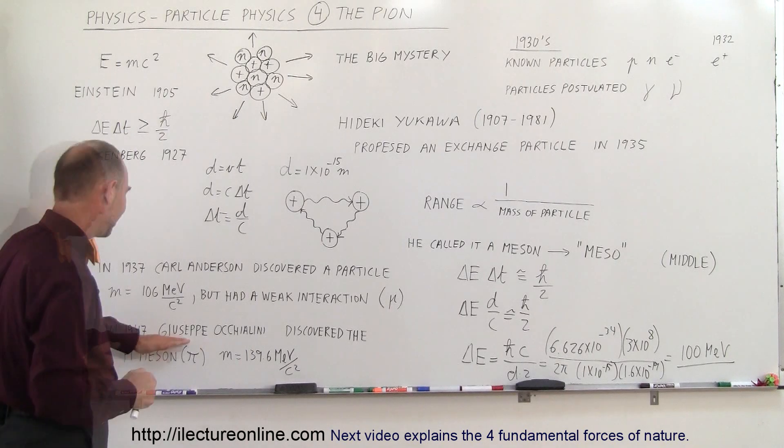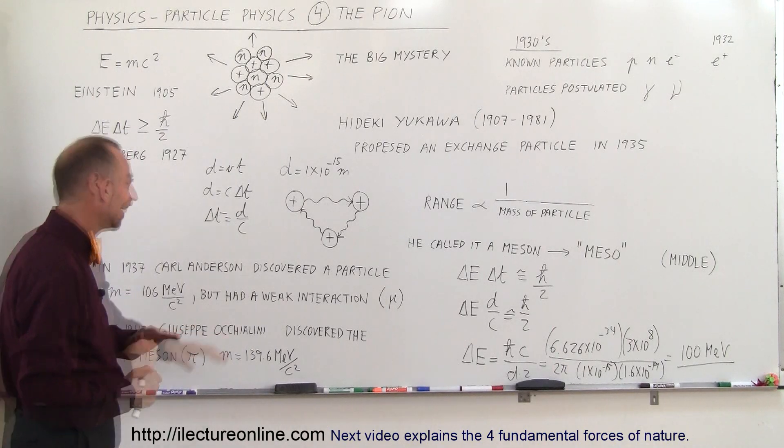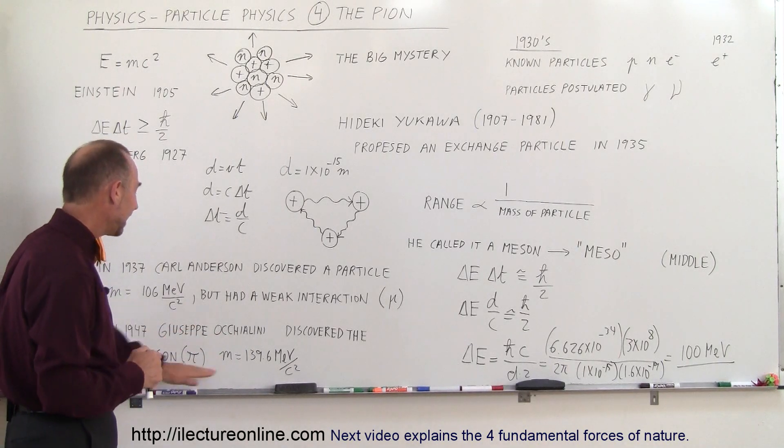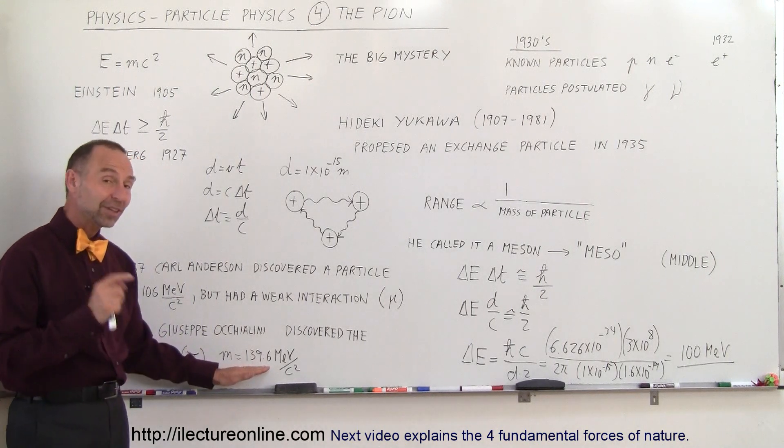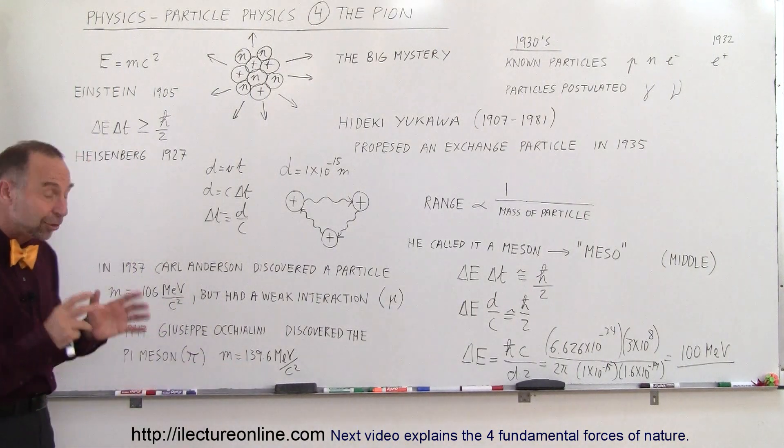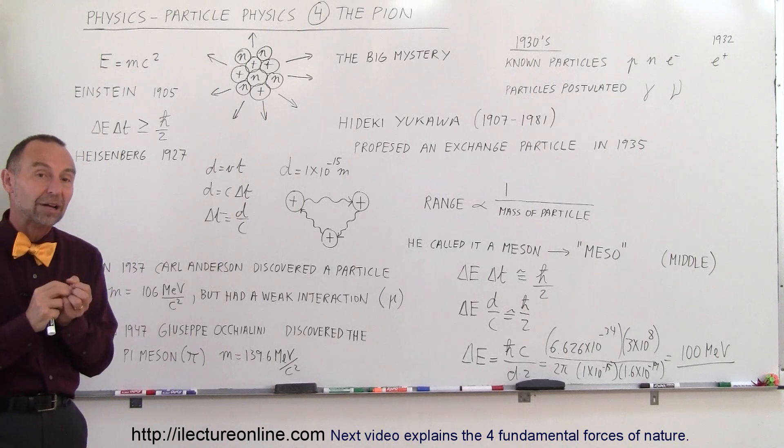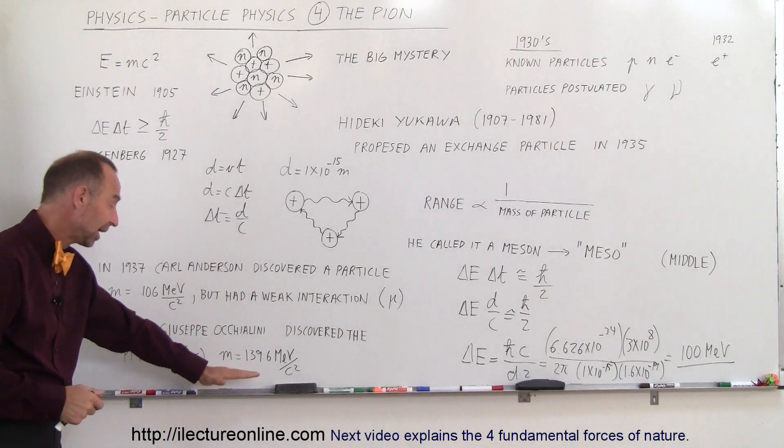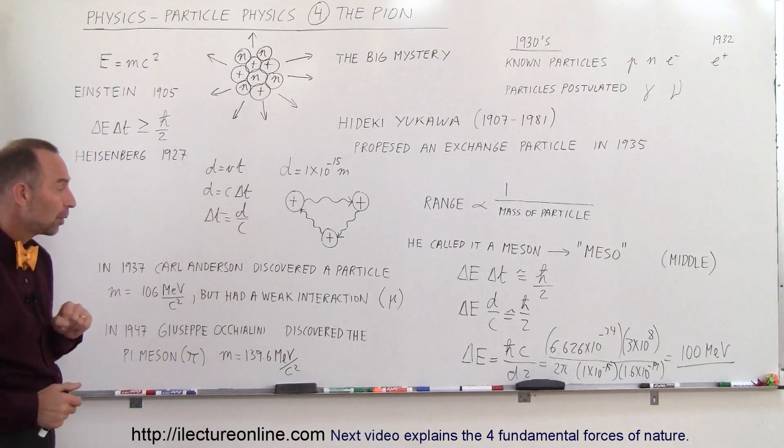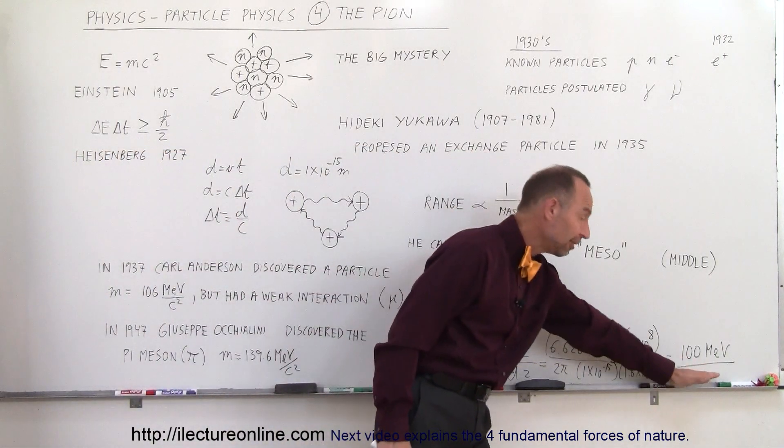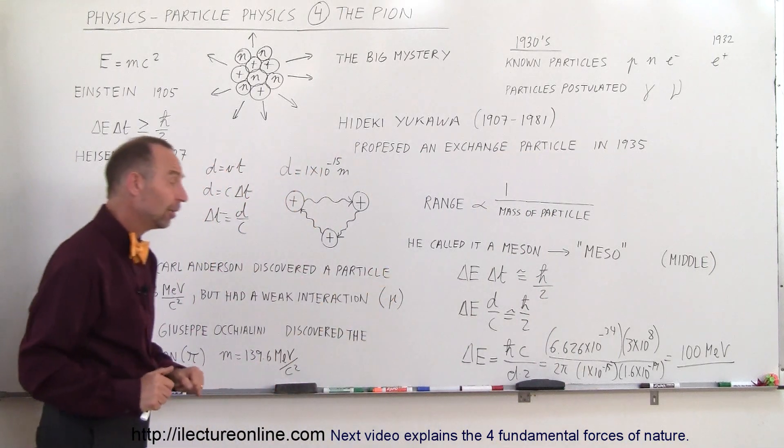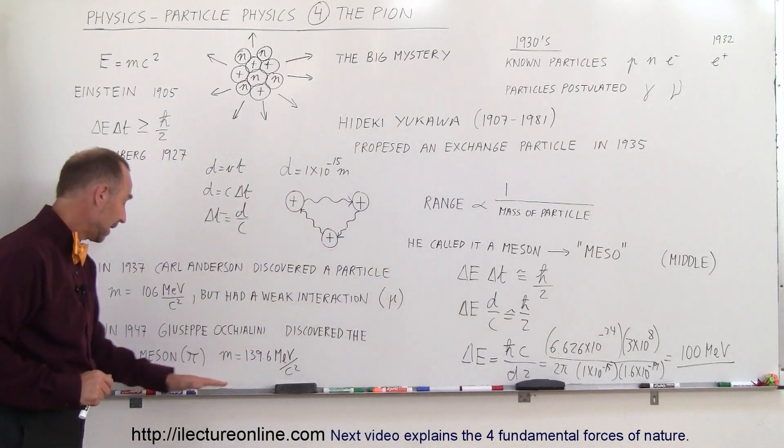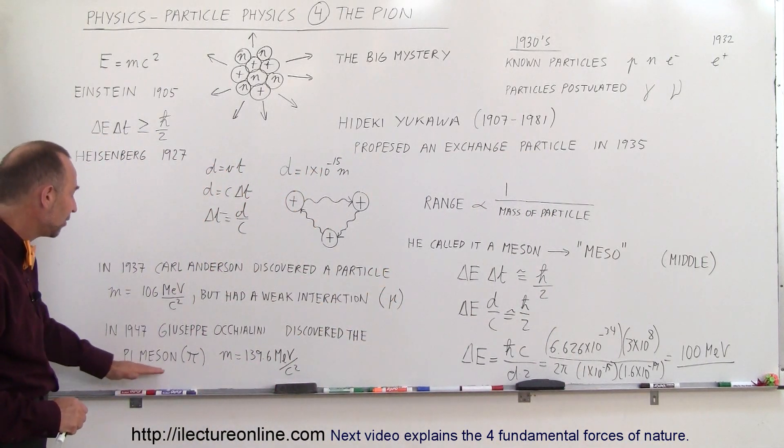In 1947, Giuseppe Occhialini, he discovered a particle, and that particle had a mass of 139.6 million electron volts, and it turned out it had a very strong interaction with the neutron, the proton, so therefore with the strong force, and so it said, this has got to be the particle that we were looking for. And it turns out, it's not that far off from the rough estimate of the size of that particle.